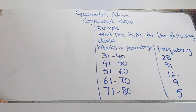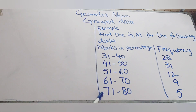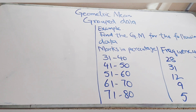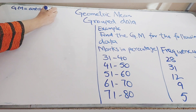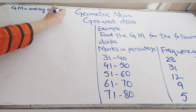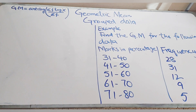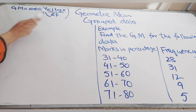Hello, dear students. This topic is geometric mean for group data. The example is: find the geometric mean for the following data, where marks in percentage and frequency are given. Always remember, for geometric mean of group data, the first step is to write down the formula. The formula is: antilog of summation F·log(X) divided by summation F.